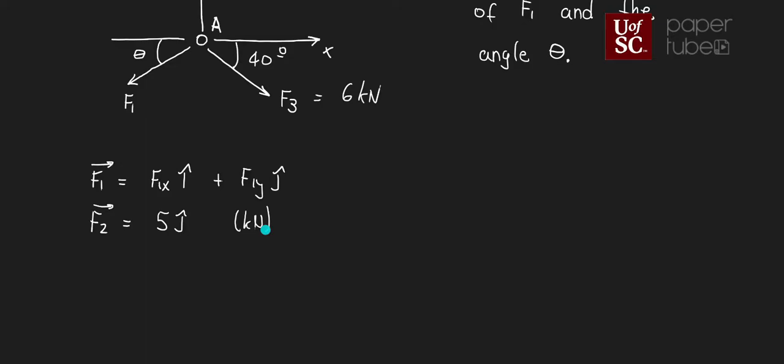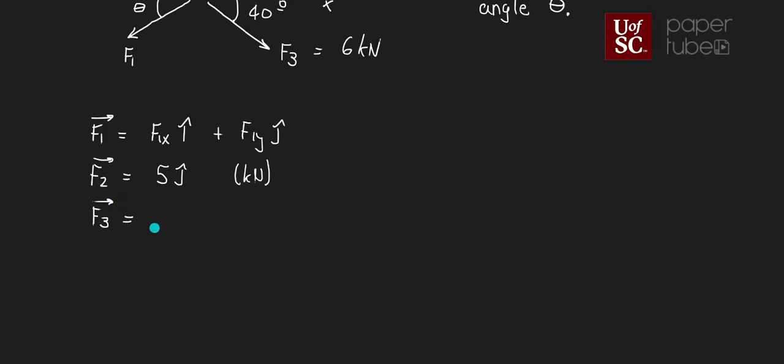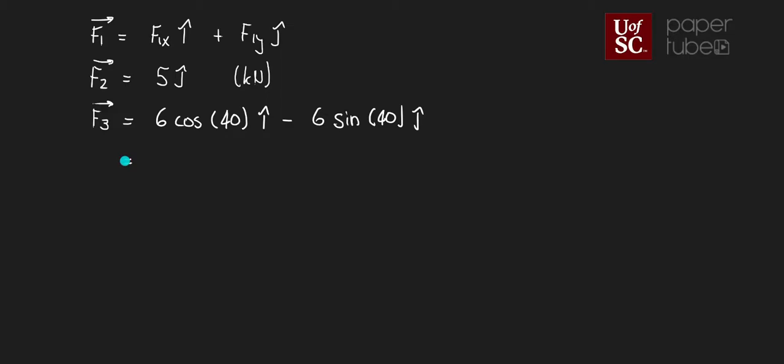And force F3, now we have that angle of 40 degrees. So we can say that this F3 is going to be equal to, let's see, the magnitude is 6 and the angle is 40 degrees, so it's going to be 6 cosine of 40 i minus 6 sine of 40 j. This is also in kilonewtons. That will give me a value of 4.596 i minus 3.857 j, again in kilonewtons. So I have my forces in Cartesian vector form.